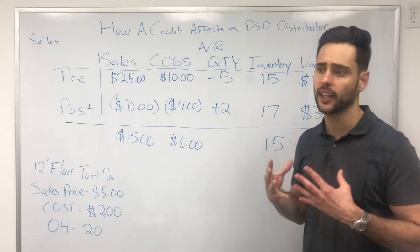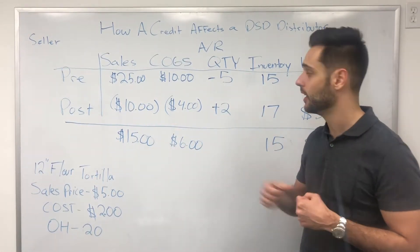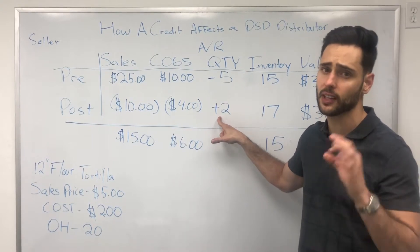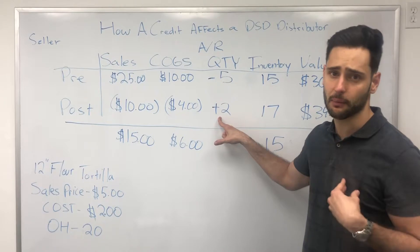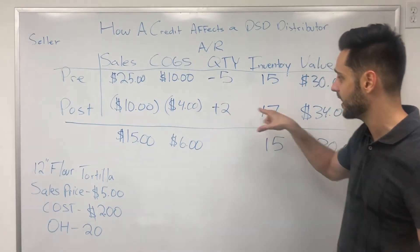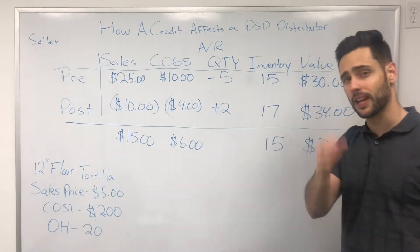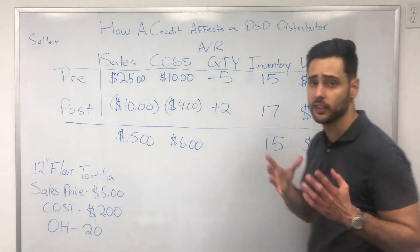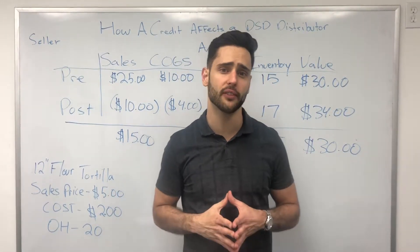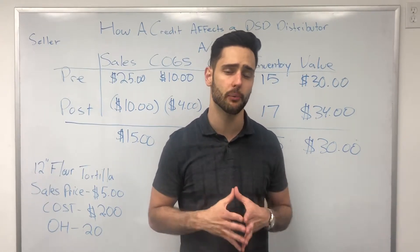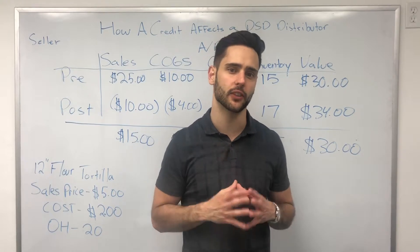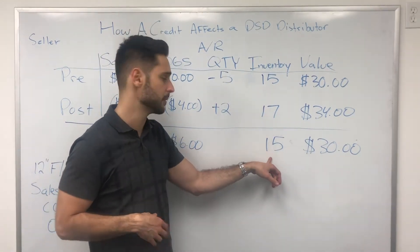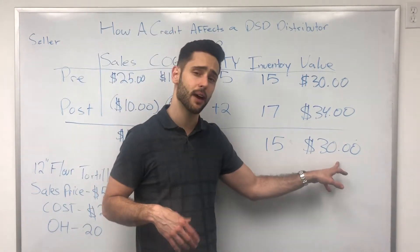Here's what happens to inventory with the credit, and here's why credits are so bad: most accounting systems recognize a credit as a return of product back to inventory. So the credit increases your inventory — but those two tortillas we picked up were stale. Nonetheless, the system adds two tortillas back, so now my inventory shows 17 instead of 15, and the asset value shows $34 instead of $30. If I'm a savvy accountant, I'll adjust those two out of inventory with a cycle count or adjustment to bring the levels back to the right values.